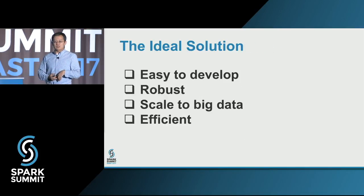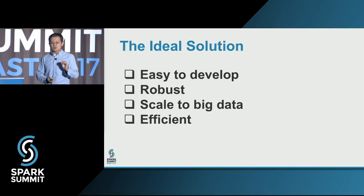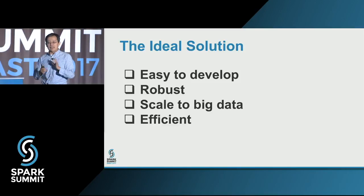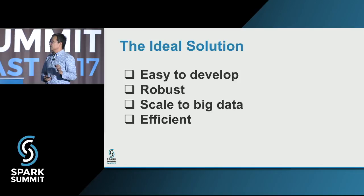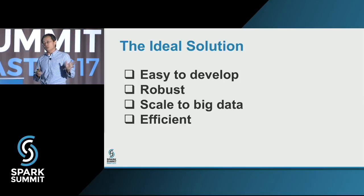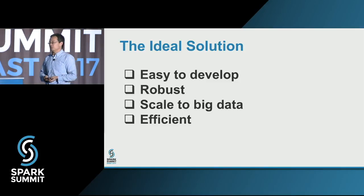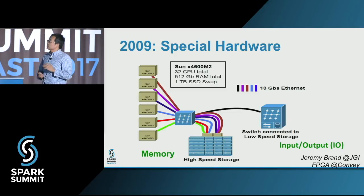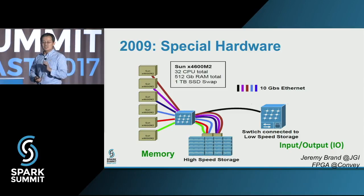The ideal solution has to be easy to develop — as bioinformaticians we don't want to spend a lot of time coding. It has to be robust — if we need to run things multiple times, it can't fail very often. We want the program, once written, to automatically scale to large data. And we want to get our answer fast and efficiently. Going back to the pre-Spark dark ages, the first solution we came up with in 2009 was focused on memory. We realized that to crunch our big data, we need a lot of memory.